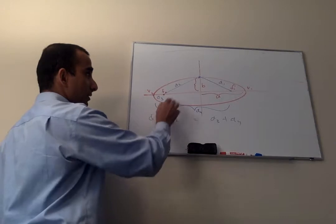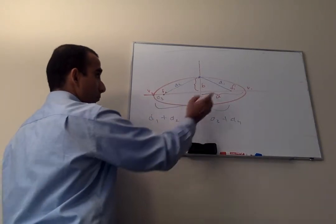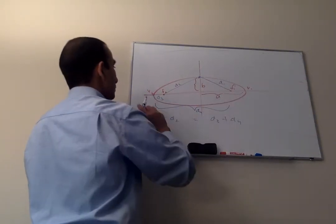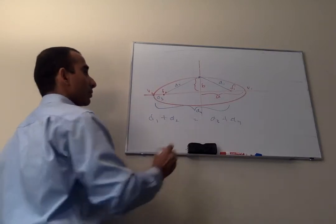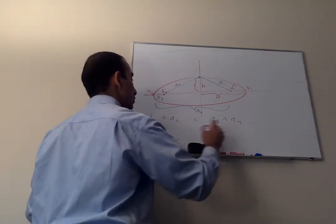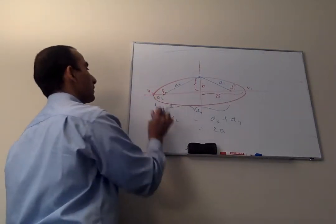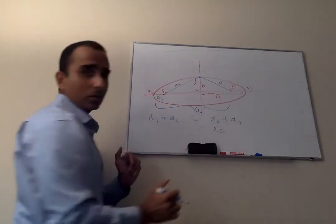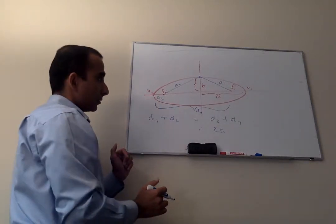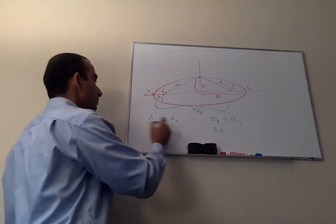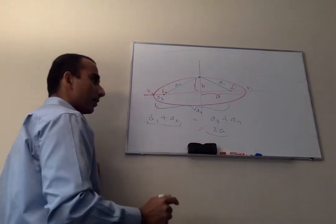But you can see over here that D3 plus D4 is also equal to 2A, because this is A and this is A, and D3 plus D4 is the entire horizontal axis. So that's the proof, the basic proof of why D1 plus D2 is equal to 2A, right?